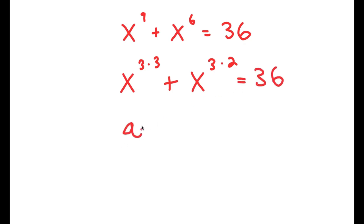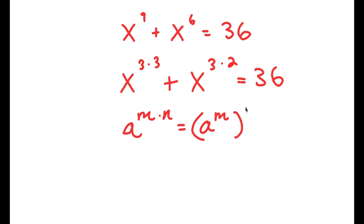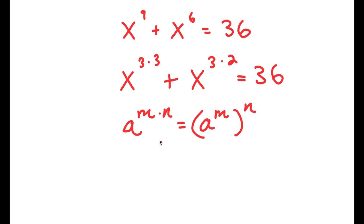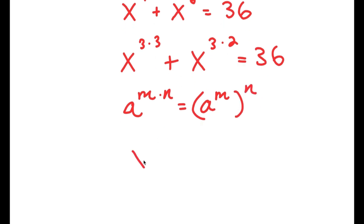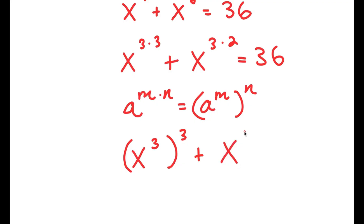Now, if I have something in the form a to the power of m times n, this is equal to a to the power of m to the power of n. So x to the power of 3 times 3 is going to equal x to the power of 3 to the power of 3, and x to the power of 3 times 2 is going to equal x to the power of 3 to the power of 2.